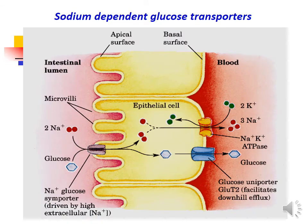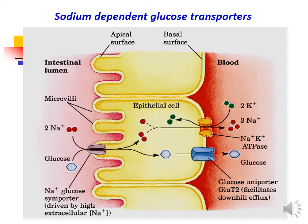Glucose is absorbed in the small intestine by a secondary active transport mechanism down the concentration gradient of sodium. Sodium is actively pumped out of the enterocyte on the basolateral side, and the resulting low sodium concentration inside the enterocyte drags sodium from the intestinal lumen into the cell through a transport protein, but only after glucose has attached itself to the protein.